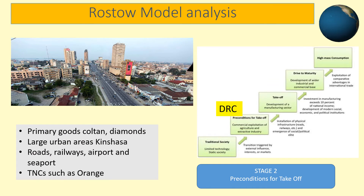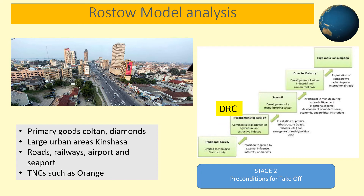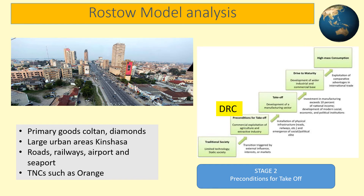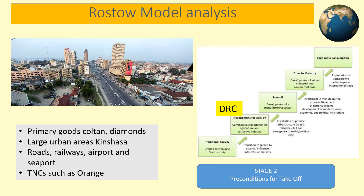Stage two is a lot more advanced than traditional societies and is where the DRC fits on the model. In these countries they have things we would expect to find, such as basic infrastructure like roads and railways. Having roads and railways allows greater trade, especially when excess goods can be sent to a seaport and exported abroad. Exporting goods — normally primary industry based — helps the nation advance. At stage two, manufacturing industries also begin, especially the processing of local materials, and these nations start to encourage TNCs to locate in the country. The DRC fits all of this category and is a lot more advanced than traditional societies but has not yet taken off in terms of its development on the Rostow model.